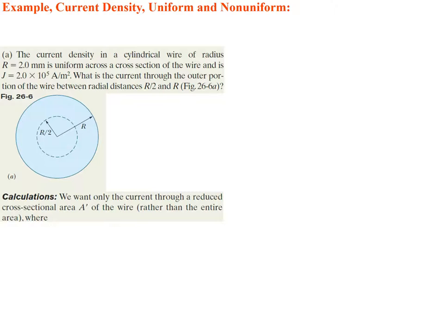Let's do some examples — first current density in a uniform situation, then non-uniform. For the uniform case: the current density in a cylindrical wire of radius R = 2 millimeters is uniform across the cross-section, and J = 2.0 × 10⁵ amps per meter squared. We're looking at the cross-section of this wire. What is the current through the outer portion of the wire between radial distances R/2 and R?